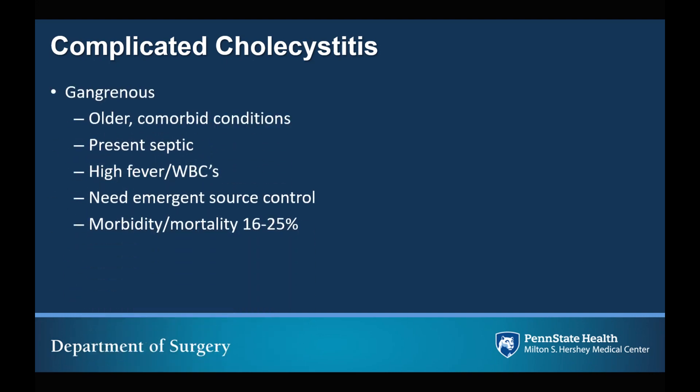The second special case is gangrenous cholecystitis. This typically occurs in patients who are older with comorbid conditions. They present very septic with high fever and elevated leukocytosis. Because of the seriousness of this disease process, you need to go for emergent source control — meaning removal of the gallbladder — compared to the urgent cholecystectomy for simple acute cholecystitis. This reflects the morbidity and mortality approaching 16 to 25% in these patients.